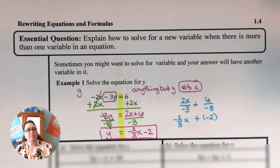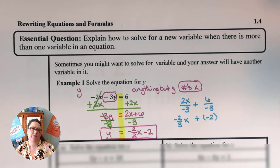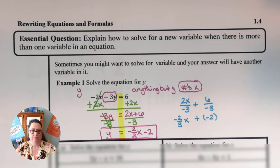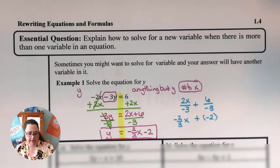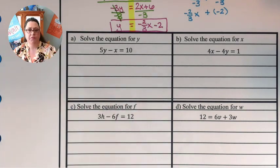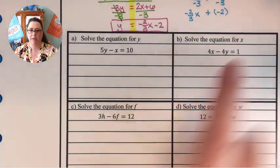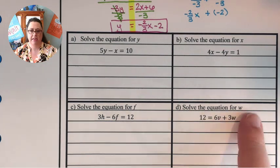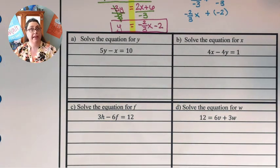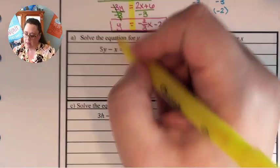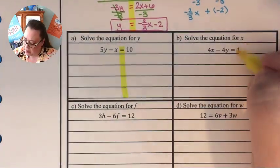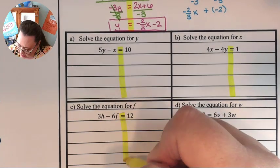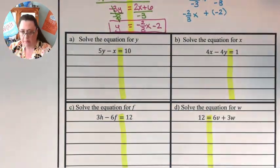When we do these problems, we go through them like all the other problems, except we're moving x's or y's around and it just looks a little different. Let's look at problems a, b, c, and d. For these we're solving for different variables: in a, solve for y; in b, solve for x; in c, solve for f; and in d, solve for w. Always pay attention to what variable you're asked to solve for. I'll go ahead and put in the dividers on all of them.